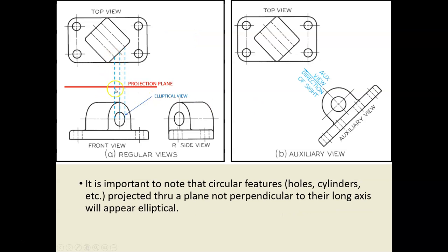Here's an explanation of the foreshortening. When we project through the projection plane, this inclined hole is at an angle relative to the projection plane. When we project down using the projectors — the blue dashed lines — we get an elliptical shape. You will be drawing some of these elliptical features in your drawings.